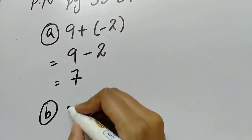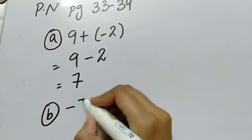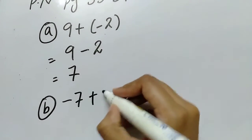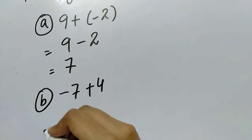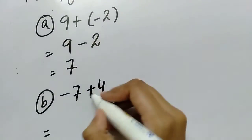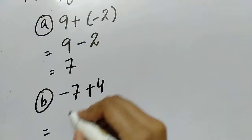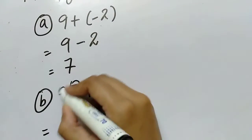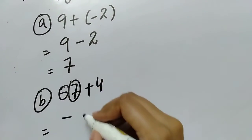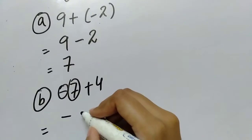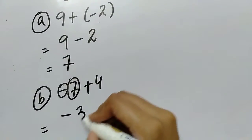Now Part B. Part B is minus 7 plus 4. So plus minus is minus. Bigger sign has minus sign. So it will be minus 3.